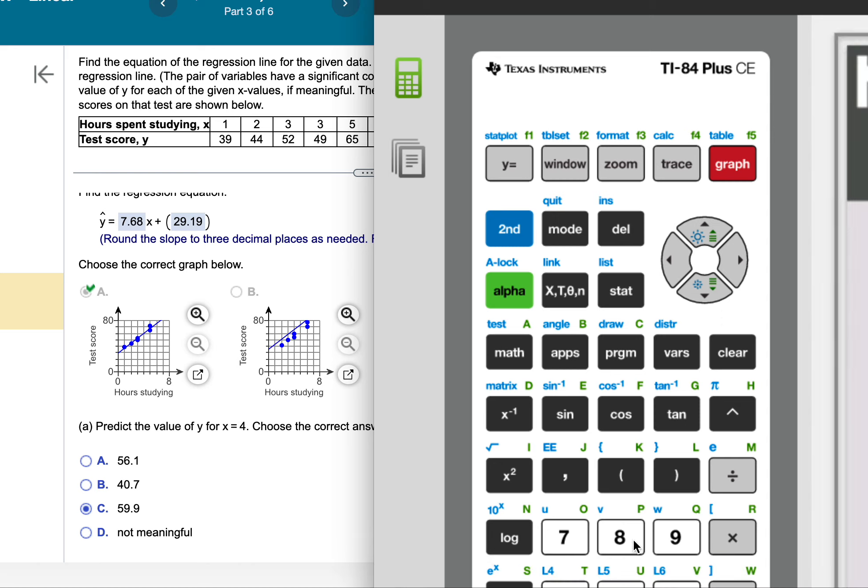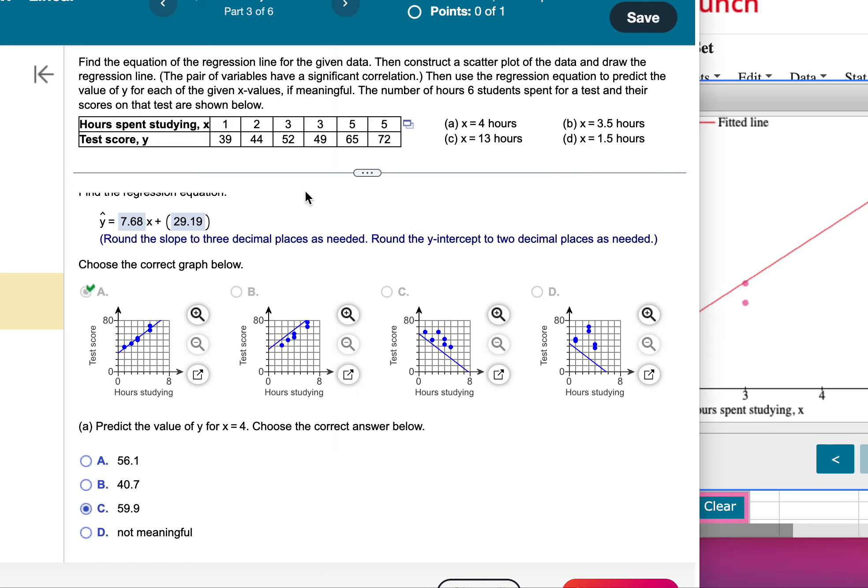Probably have to close it and get it to work. Anyways, take 7.68 times four plus 29.19. I'm just going to do it with my handheld, this isn't working for us to get it on the screen. So 7.68 times four plus 29.19: 59.91. So there's your answer.